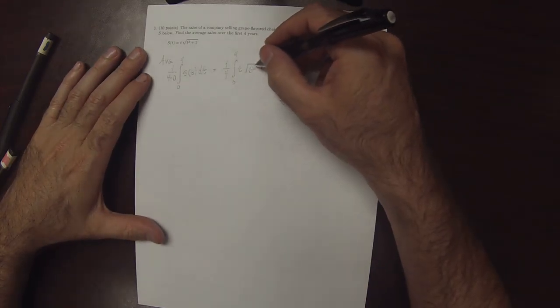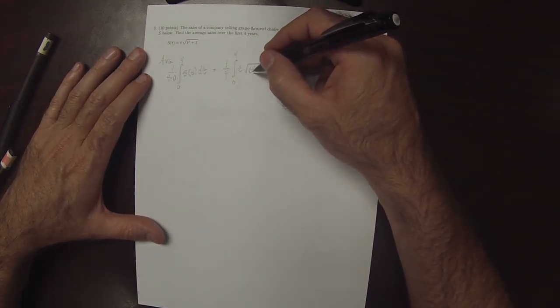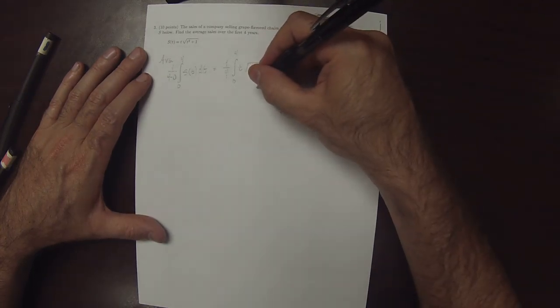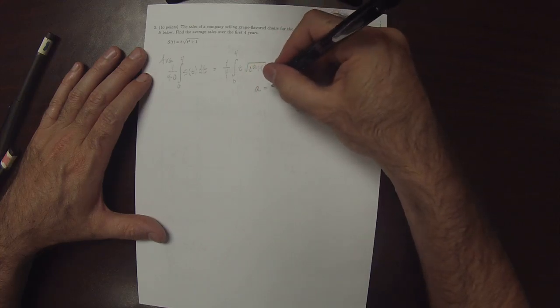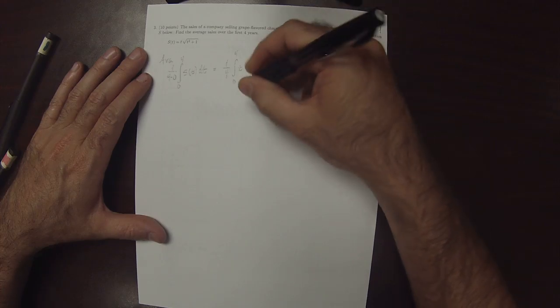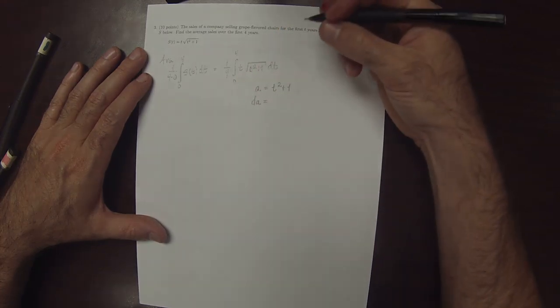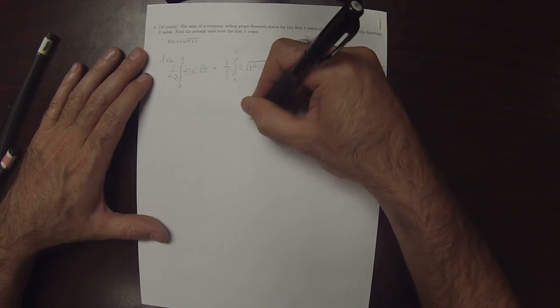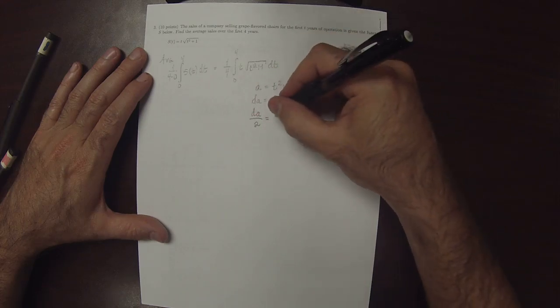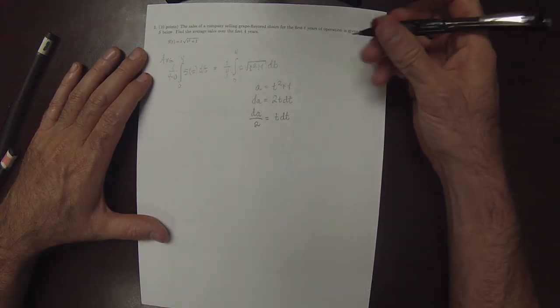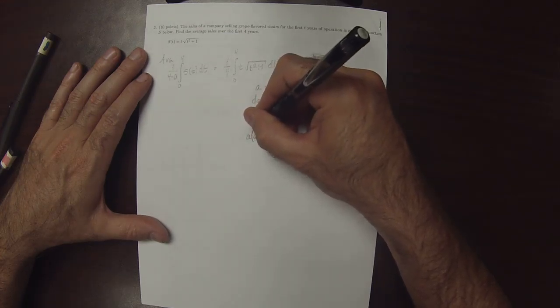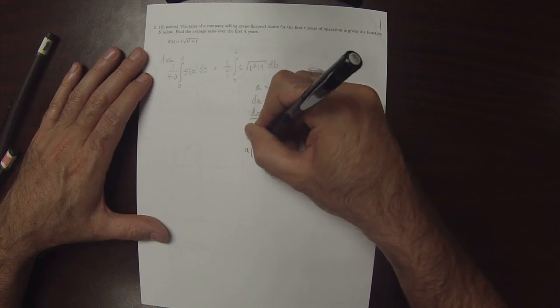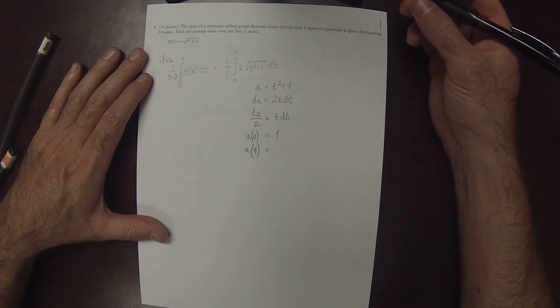So if we're going to use the fundamental theorem, the antiderivative is slightly interesting here because we'll need a substitution. So I'll do the substitution. A is t squared plus 1, so that dA is 2t dt. So then dA over 2 is t dt. And A evaluated at the lower limit, 0 is 1. And A evaluated at the upper limit, 4 is 17.